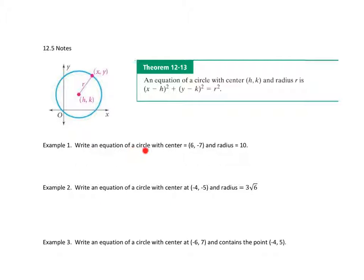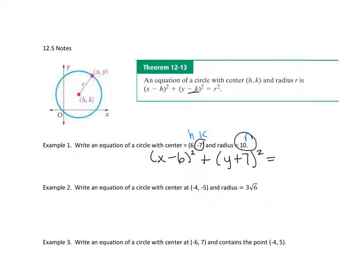Example one: write an equation of a circle with center (6, negative 7). So h is 6, k is negative 7, and the radius is 10. Plugging into the formula: (x minus 6) squared plus (y minus negative 7). Since minus and negative 7 gives plus 7, it becomes (x minus 6) squared plus (y plus 7) squared equals 100.